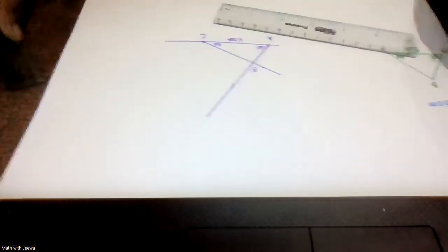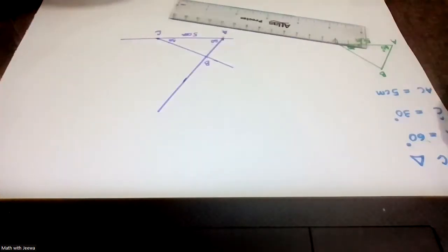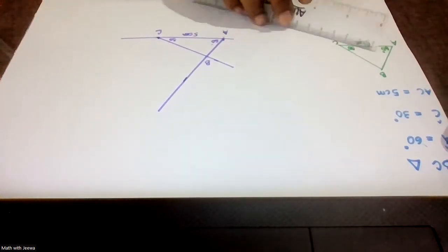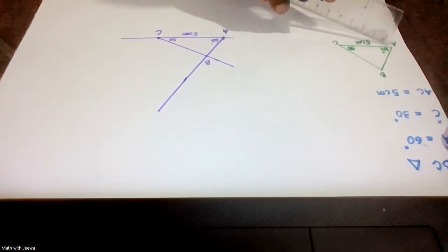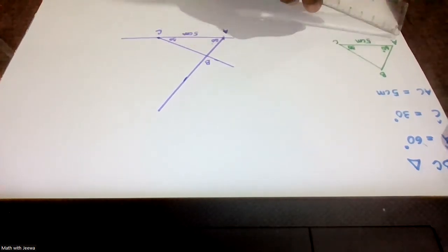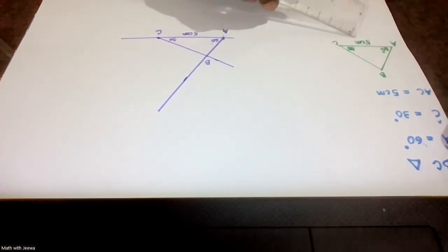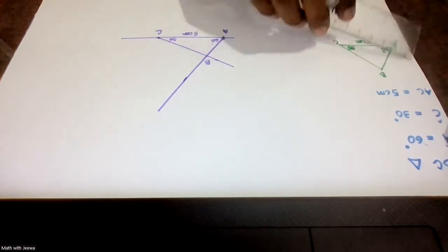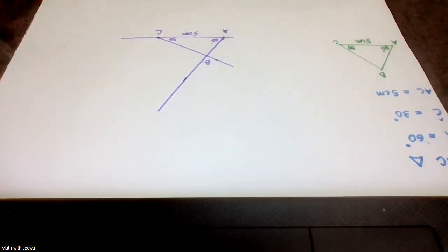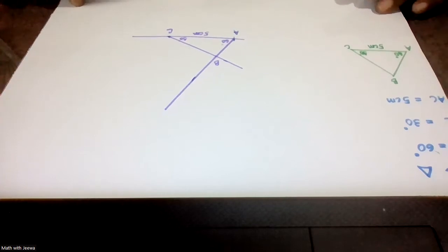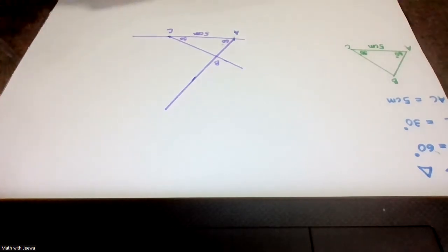This is 60 degrees, this is 30 degrees, and this is 5 centimeters. This is how you construct this triangle using the ruler and the protractor. The information was: ABC triangle, angle A = 60°, angle C = 30°, AC = 5 cm.